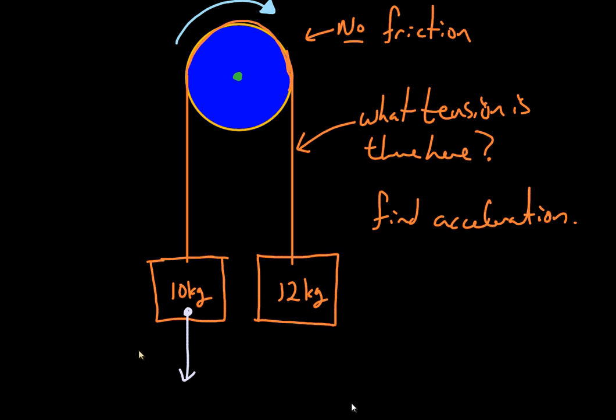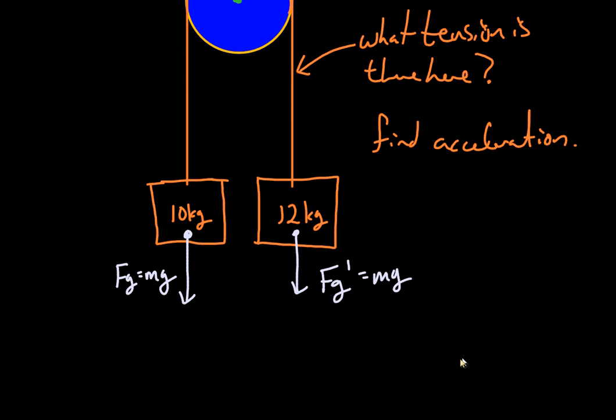One force here is going to be gravitational force on this. Same thing over here. So F equals mg. Let's just attach numbers to this and see if we can figure out what's going on. M times g here, 10 kgs times 9.8 meters per second squared, gives us roughly 98 newtons down to the left.